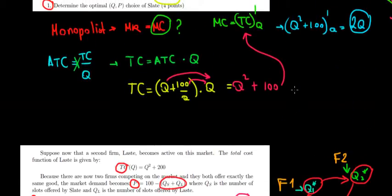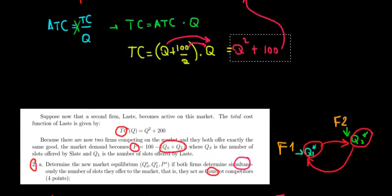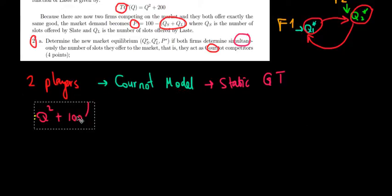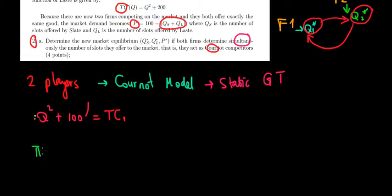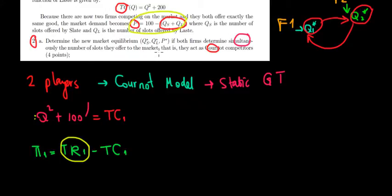The total cost from the first company was Q1² + 100 — let's copy and paste it here as TC1. We need to maximize profits for each company, so we need the profit for the first one and the profit for the second one. The profit for the first company equals total revenue of the first company minus total cost of the first company. The key is finding the total revenue of the first company, which relates to the second company's quantity.